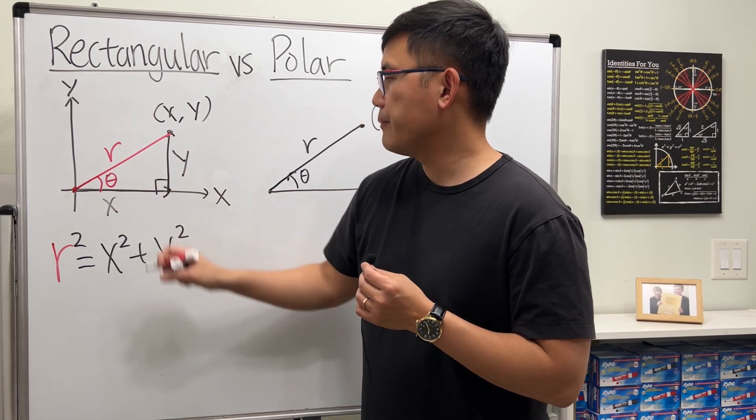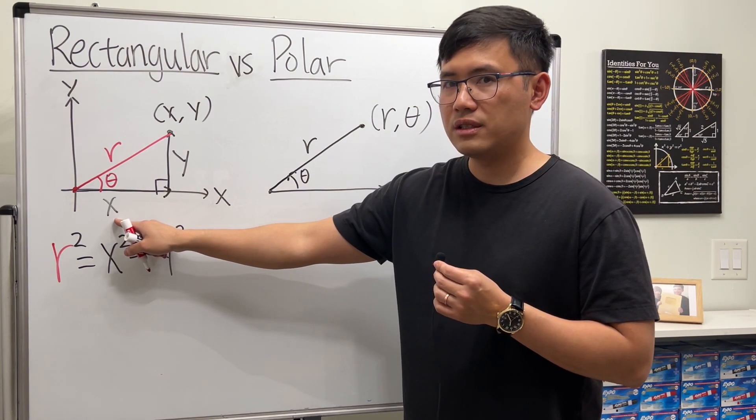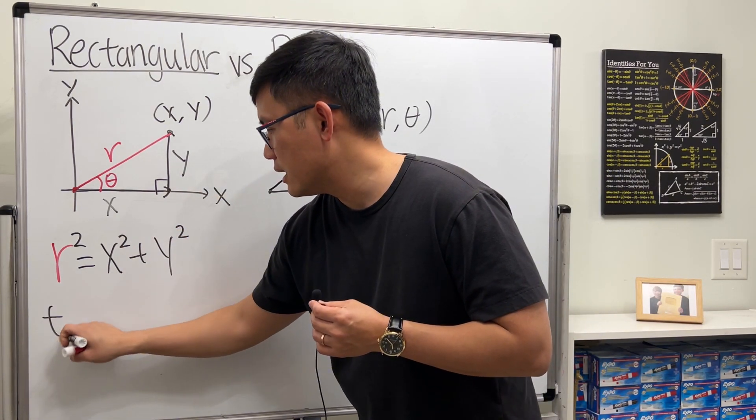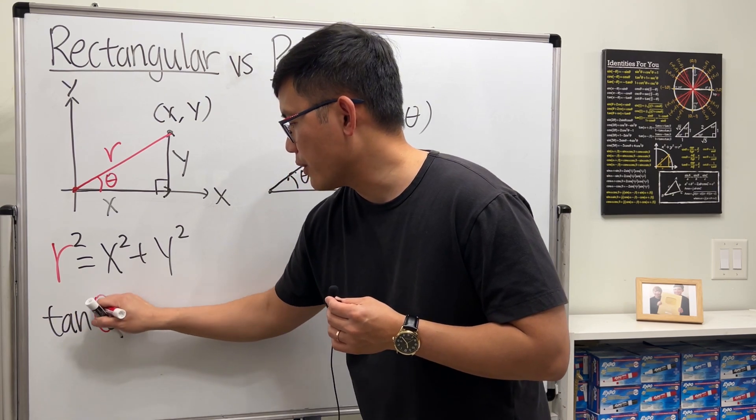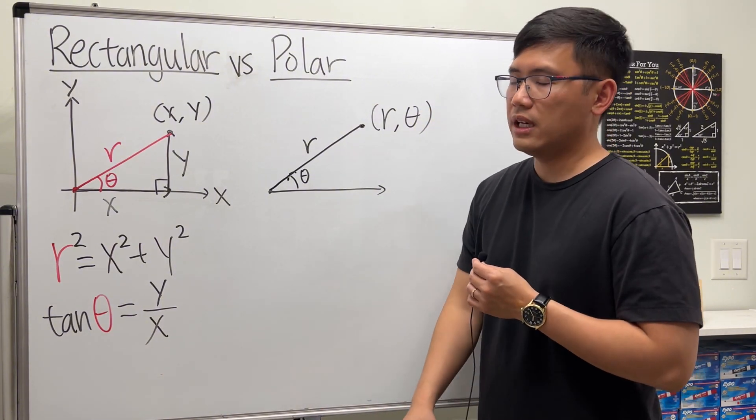Next, to figure out the angle theta, we have x and y given. We have the opposite and the adjacent, so we can use tangent. Tangent of the angle theta equals opposite, which is y, over adjacent, which is x.